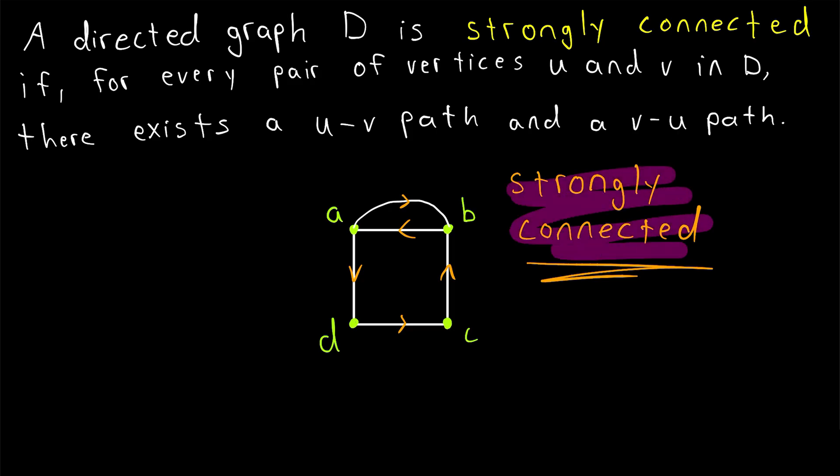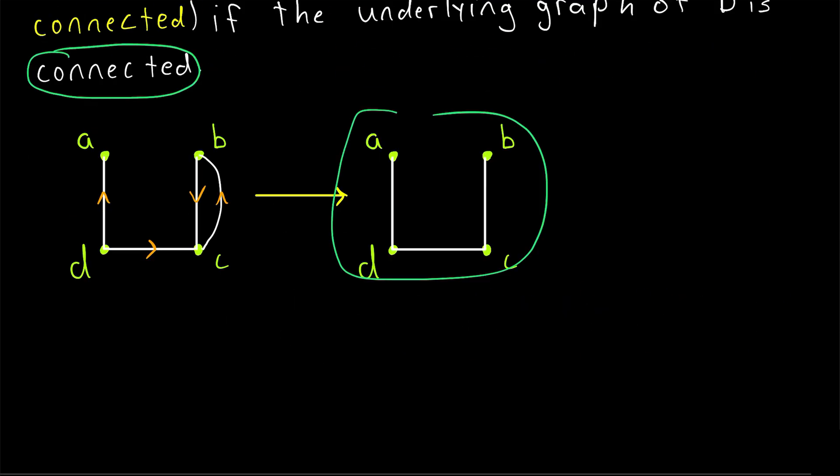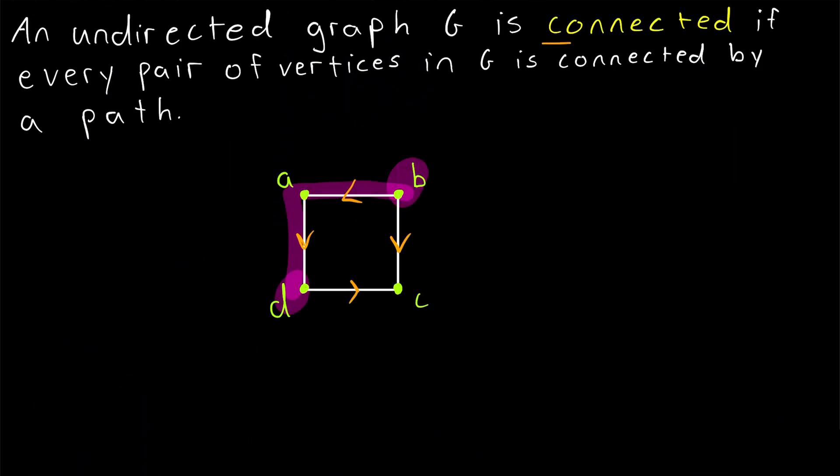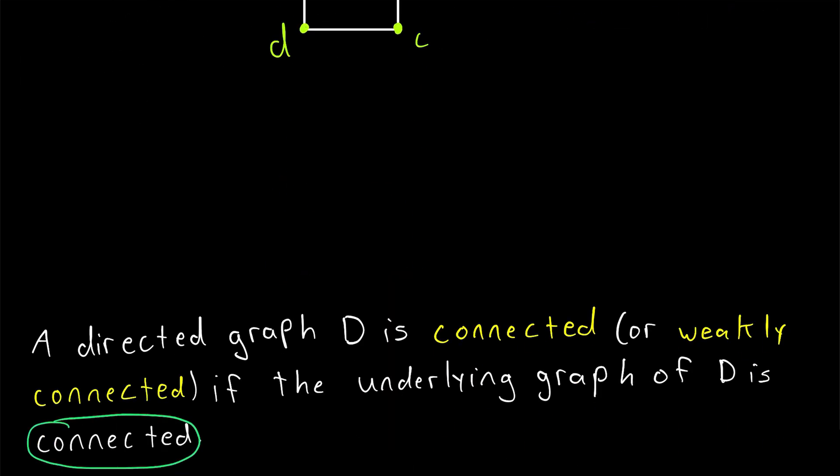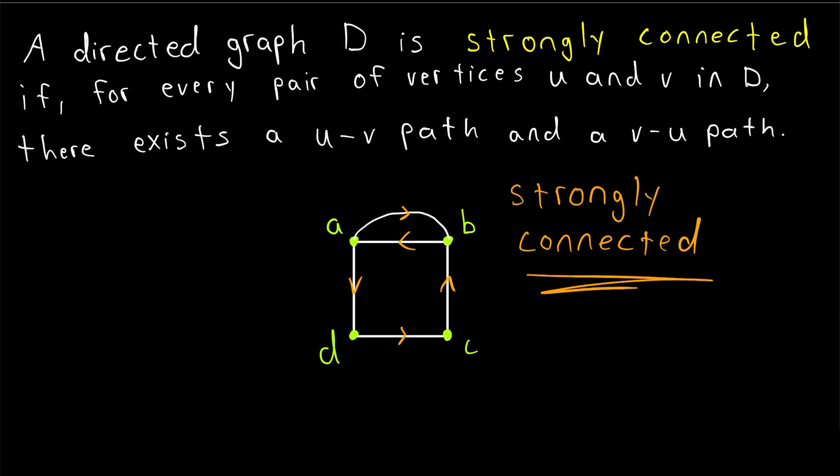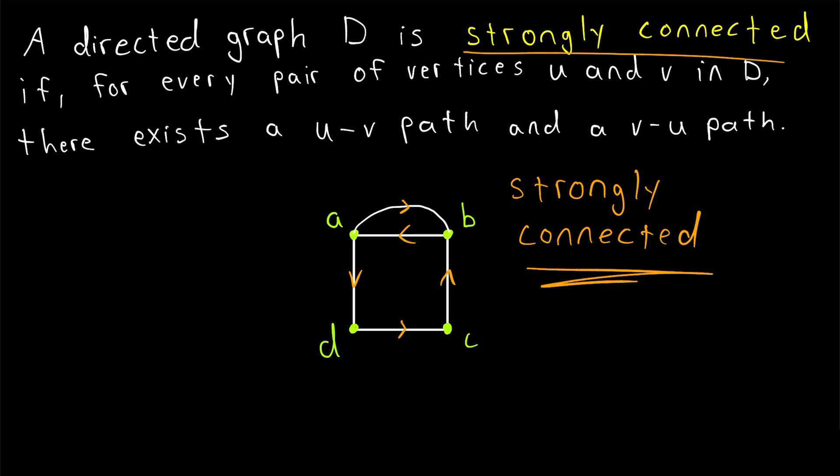And notice how this really captures the same idea of connectivity for undirected graphs. An undirected graph is connected if every pair of vertices in the graph is connected by a path. And in an undirected graph, that means it's possible to reach any vertex from any other vertex. For example, since we can travel from A to C, and the edges don't have direction, we can also reach A from C. We can travel from C to A. And that same idea is captured in directed graphs with the definition of strongly connected.